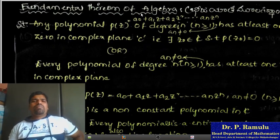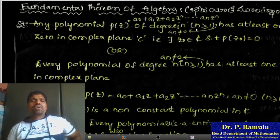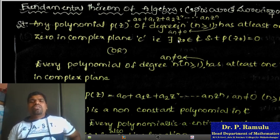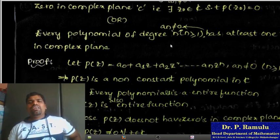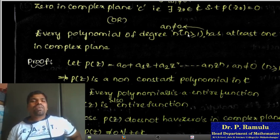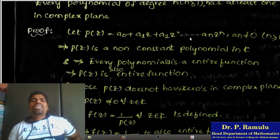Fundamental theorem of algebra. Statement: Any polynomial p(z) = a₀ + a₁z + a₂z² + ... + aₙzⁿ, where aₙ ≠ 0 and n ≥ 1, has at least one zero in the complex plane C. That is, there exists z₀ such that p(z₀) = 0. Every polynomial of degree n ≥ 1 with aₙ ≠ 0 has at least one zero in the complex plane.